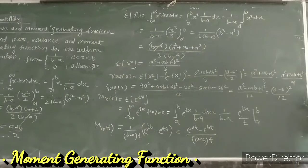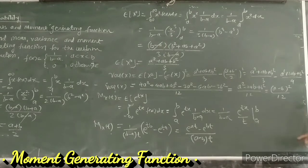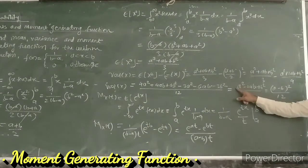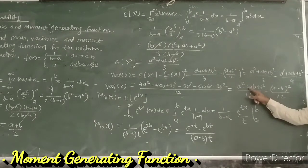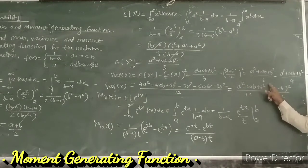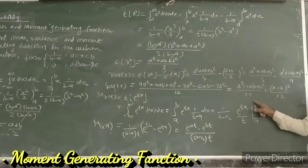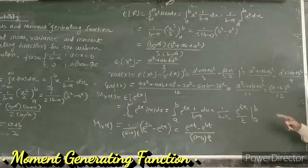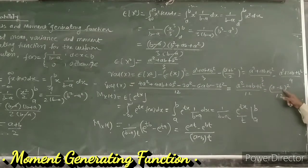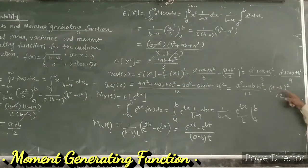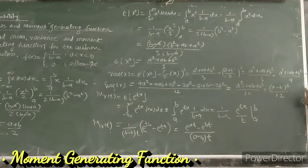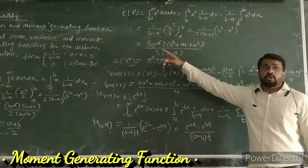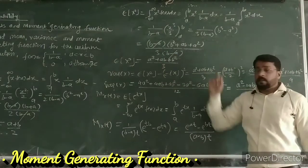Cross-multiplying and simplifying gives (a² - 2ab + b²)/12, and the numerator is (a - b)², so the variance equals (b - a)²/12. This is the variance of x for the uniform distribution.